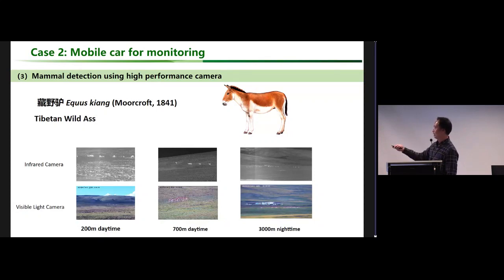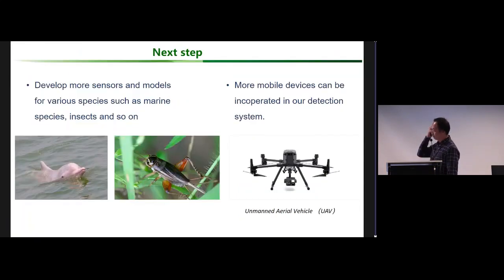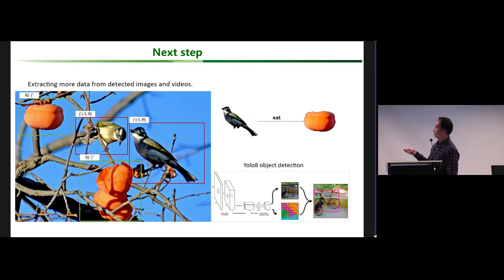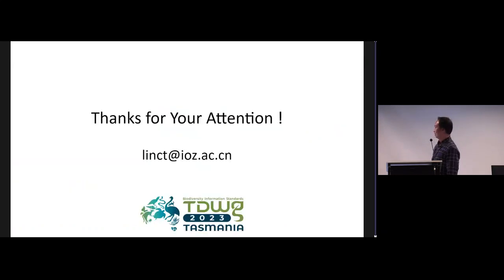That's all about my presentation. The next step is about how to develop more sensors and models for various species such as marine species and insects. We can also incorporate more mobile devices into our detection system, and then we can extract more data from detected images, videos, and even sound data. Thank you for your attention.